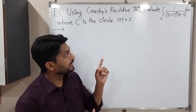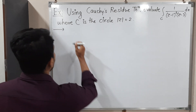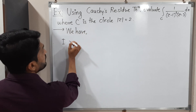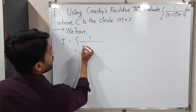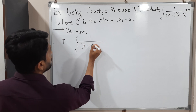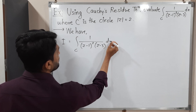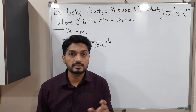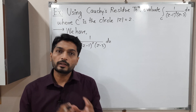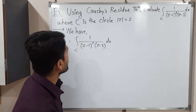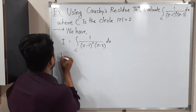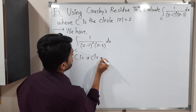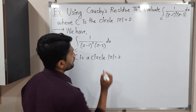I will call the given integral as I. We have I equals the integration over C of 1 upon (Z minus 1) squared (Z minus 3) dZ. The important part is the given circle C, where C is a circle mod Z equals 2.